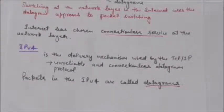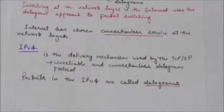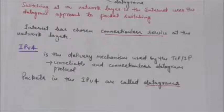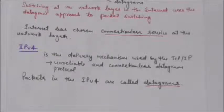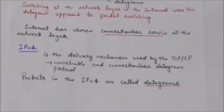IPv4 stands for Internet Protocol version 4. It is the delivery mechanism used by TCP/IP. IPv4 is an unreliable and connectionless datagram protocol — it provides no error control or flow control, except for error detection on the header.